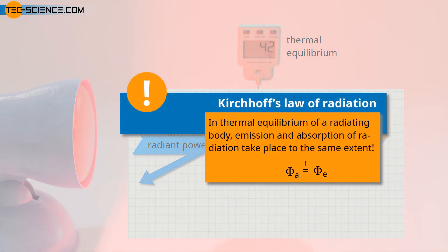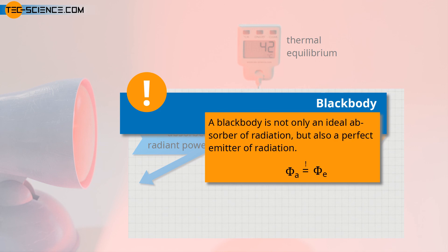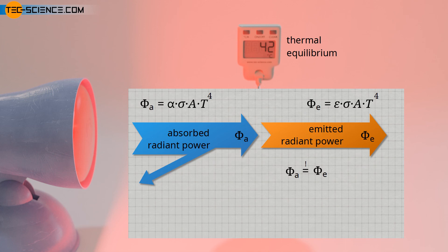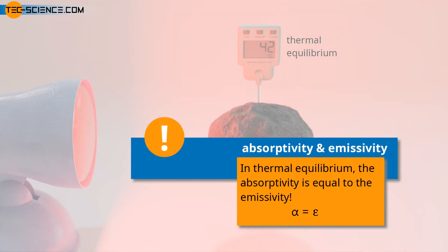This law is also called Kirchhoff's Law of Radiation. According to Kirchhoff's Law of Radiation, the emitted radiant power in thermal equilibrium is just as high as the absorbed radiant power. A real body that has a lower absorption power than an ideal blackbody will therefore also have a lower emission power to the same extent. However, this also means that a body that absorbs to the maximum also emits to the maximum. A blackbody is therefore not only an ideal absorber of radiation, but also a perfect emitter. For real objects, a purely formal differentiation is made between absorptivity and emissivity, but in thermal equilibrium this distinction is obsolete because both values are identical according to Kirchhoff's Law of Radiation. To show this, we equate the respective formulas for absorption power and emission power in thermal equilibrium — in thermal equilibrium, the absorptivity is equal to the emissivity.